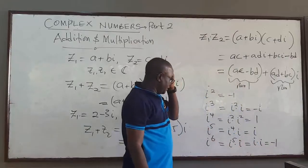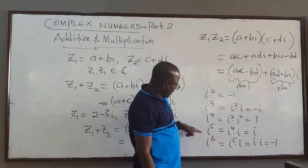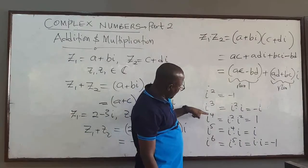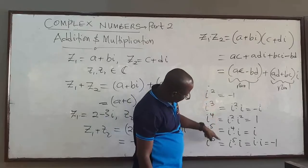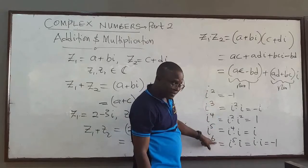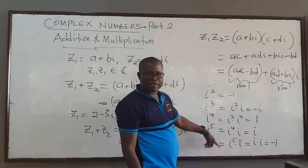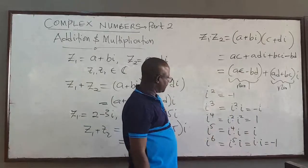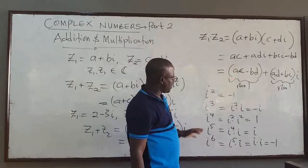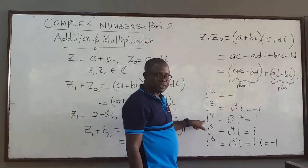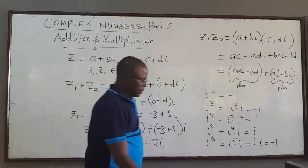So it repeats in cycles of 4: i is i, i squared is negative 1, i cubed is negative i, i to the power 4 is 1, and then it repeats. You will often need these when you are multiplying complex numbers because you may come across i to the power 4, 5, 6, and so on.